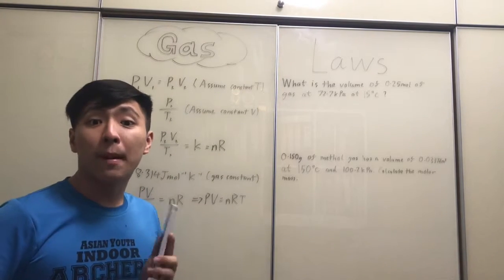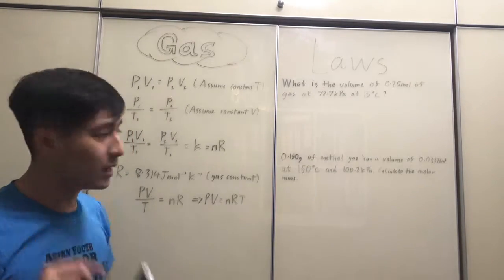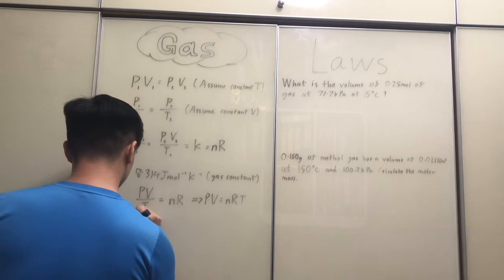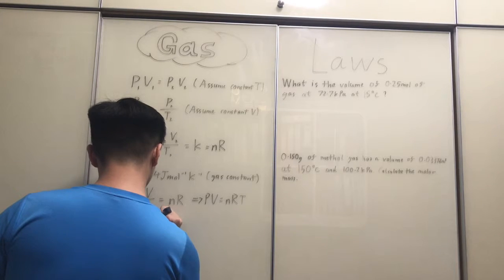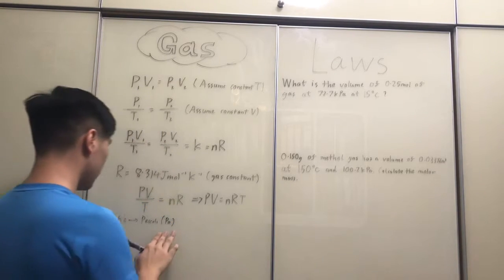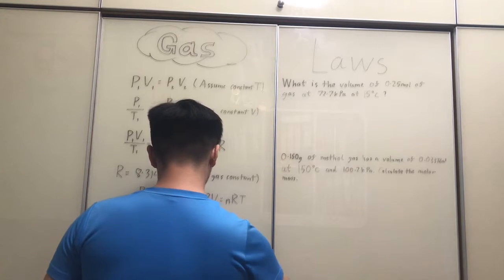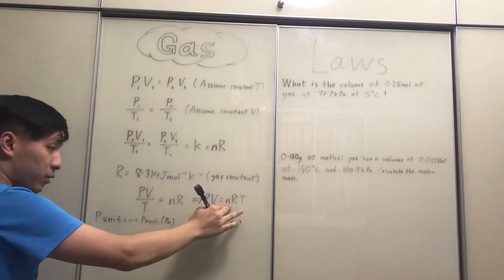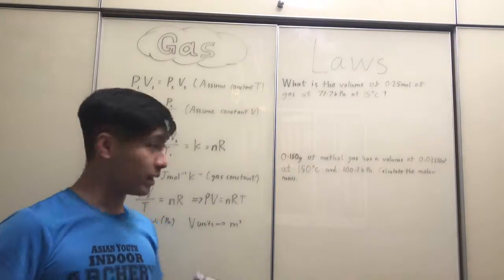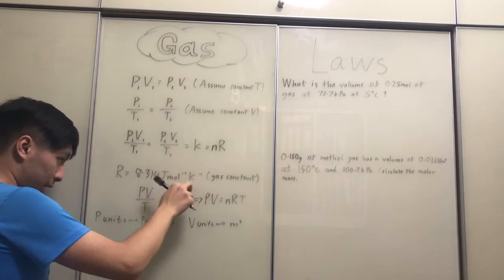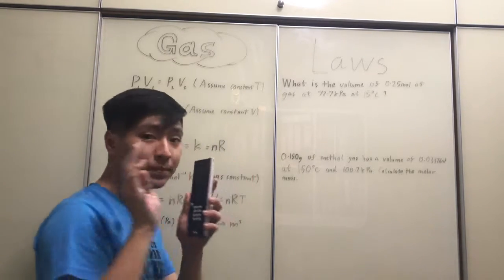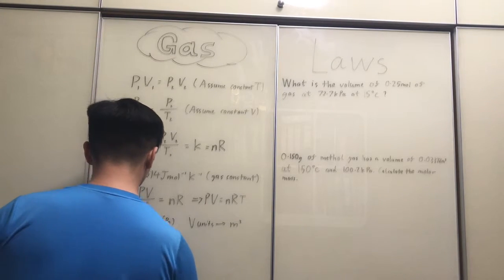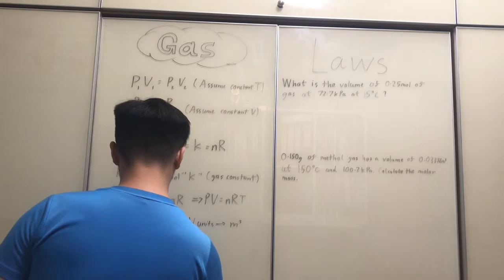One of the main things you have to remember about PV equals nRT is the units. So P pressure's units is Pascals, PA. The volume's units is in meters cubed. Then the number of moles units, N is just moles, then R's units, as we mentioned beforehand, joules per mole per Kelvin. Now, the biggest part here is T. The T's units is not in Celsius, it's not in Fahrenheit. It's in what we call Kelvin, or the value K.